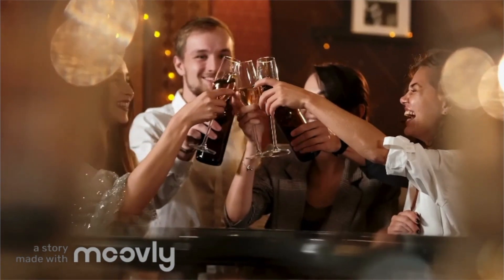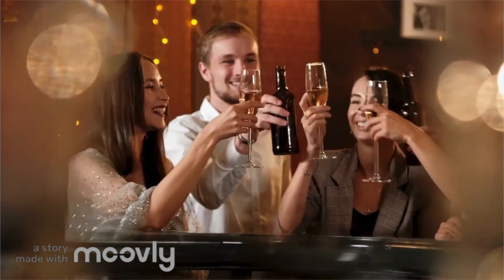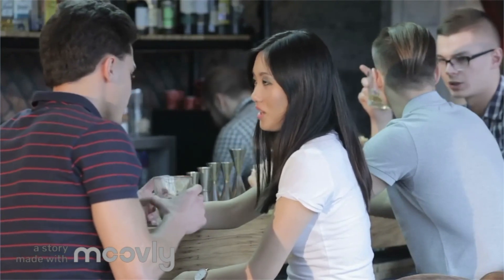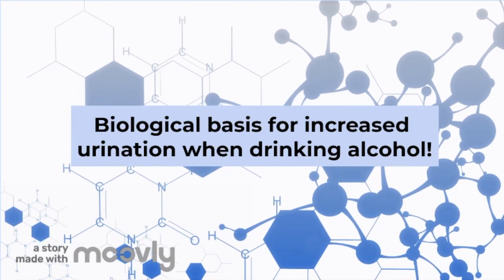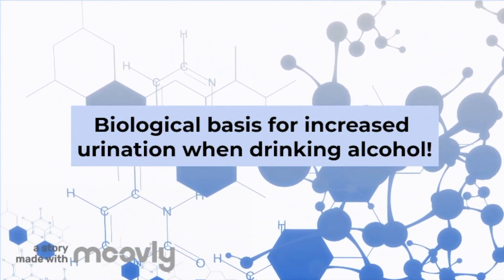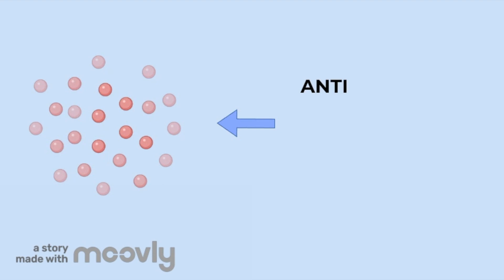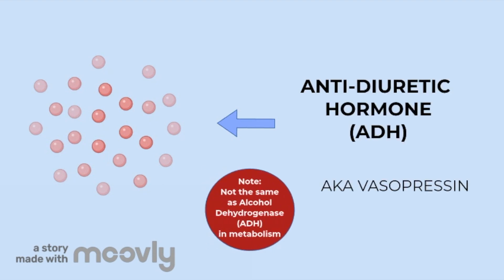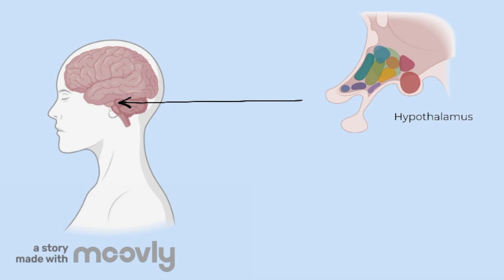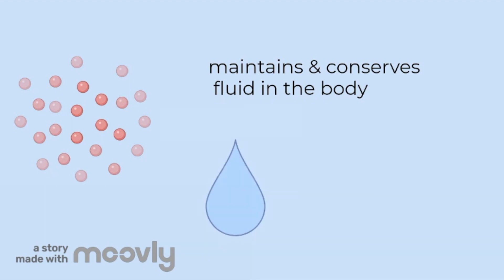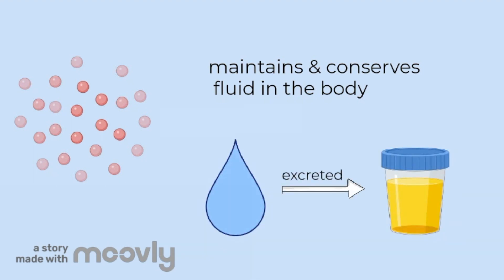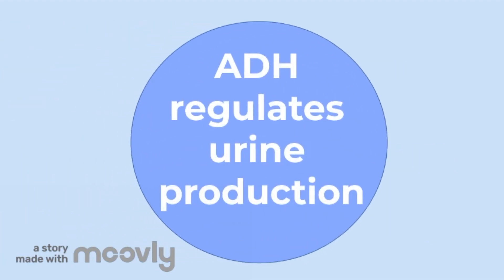Have you ever noticed extremely long lines for the bathroom at a party, or the increased feeling that you have to pee when you drink? Or maybe someone has told you not to break the seal when drinking? Well, it turns out there is a biological basis for increased urination when you drink, and it has nothing to do with the volume of liquid consumed. In your body, you have a hormone called anti-diuretic hormone, or ADH, also known as vasopressin. It is made in a part of the brain called the hypothalamus, and is stored and released from the posterior pituitary, also located in the brain. ADH is responsible for maintaining and conserving the amount of fluid in the body, and regulates the amount of urine produced.